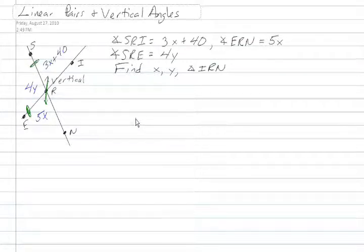And that means they're congruent. So we can say that 3x plus 40 is equal to 5x, which means that 40 is equal to 2x and x is equal to 20.